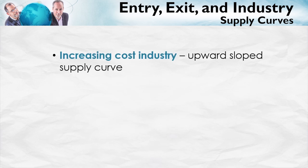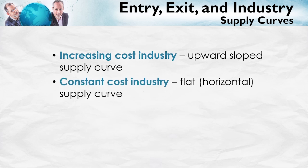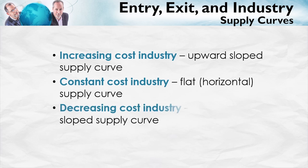So what we've shown is that for an increasing cost industry, you can derive an upward sloped supply curve. We're now going to do a constant cost industry — for which you get a flat supply curve — and then a decreasing cost industry, which gives you a downward sloped supply curve. We'll cover these in separate lectures. Thanks.